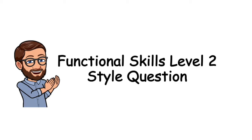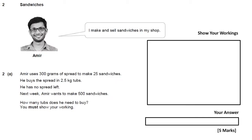Hello, I'm Mr Maths and today we're going to be looking at a functional skills level 2 style question. You'll find this on your basic functional skills level 2 exam. So Amir uses 300 grams of spread to make 25 sandwiches. He buys the spread in 2.5 kilogram tubs. He has no spread left. Next week Amir wants to make 500 sandwiches. How many tubs does he need to buy? You must show your working out — this question is worth five marks, so it's really important that you show all your working out.